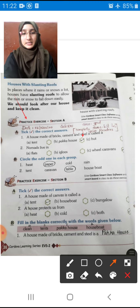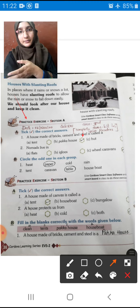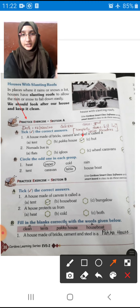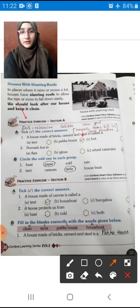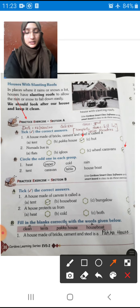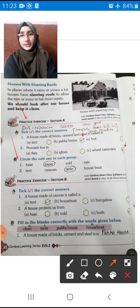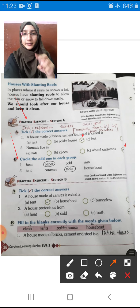Second one: Nomads live in? Nomads are those people who go from one place to another place in search of food. They are food searchers who move from here to there. They stay in wheel caravan. So we have to put the right mark in the third circle. Now, circle the odd one in each group. You have to circle what is mismatched.